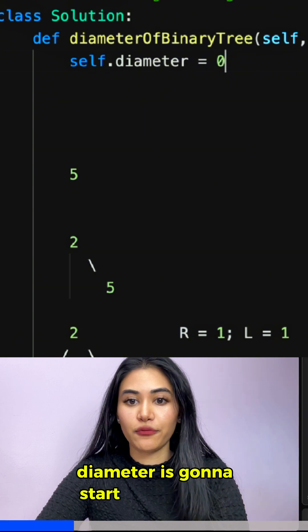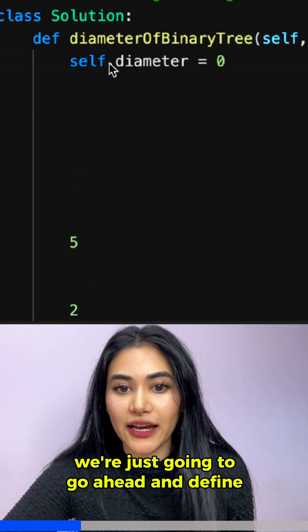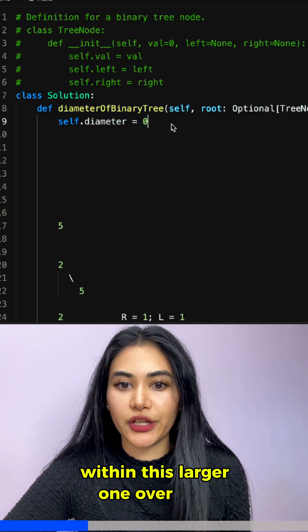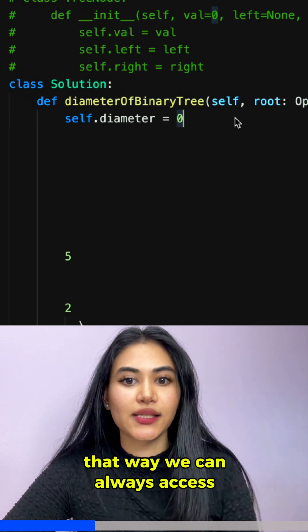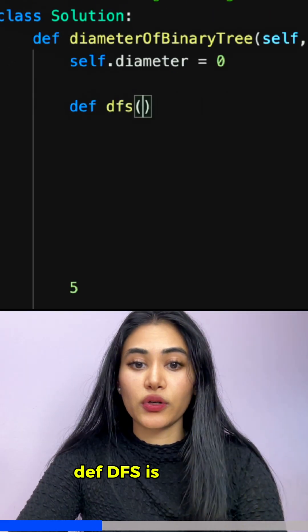For that, diameter is going to start off with zero. We're just going to go ahead and define a function within this larger one over here. That way we can always access diameter. The DFS is going to take in a node.